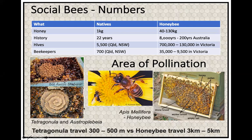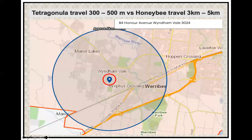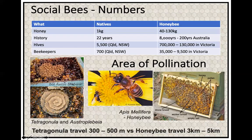The tetragonula travels between 300 and 500 metres versus the honeybee, which travels between 3 and 5 kilometres to find food. For example, the stingless bee is actually used to pollinate macadamia nuts because they fit much better into the flowers.